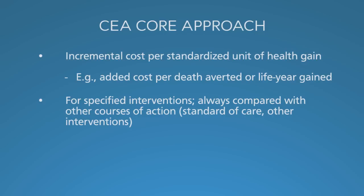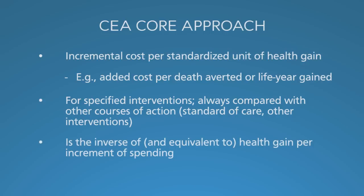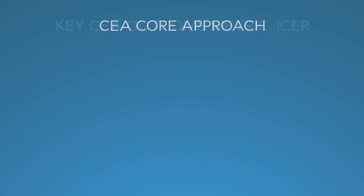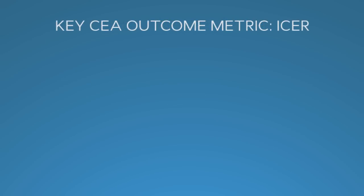I want to emphasize that this is one of the critical elements of doing a cost-effectiveness analysis correctly: saying what you are comparing to what. No intervention can be properly considered in isolation. It is also important to note that the cost-effectiveness ratio — the cost per standardized unit of health gain — is the inverse of health gain per increment of spending. If you get more added health per increment of spending, then you are spending less per added unit of health. The key outcome metric for cost-effectiveness analysis is the Incremental Cost-Effectiveness Ratio.